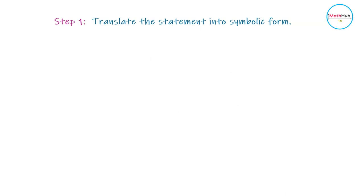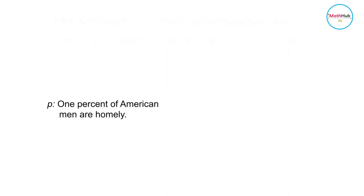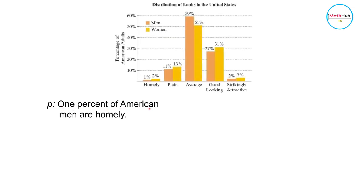We begin by assigning letters to the simple statements. As always, we let these letters represent statements that are not negated. P is used to represent 1% of American men are homely. This statement is true from the graph.